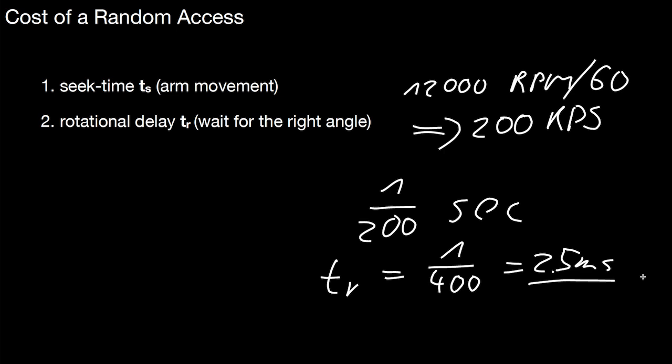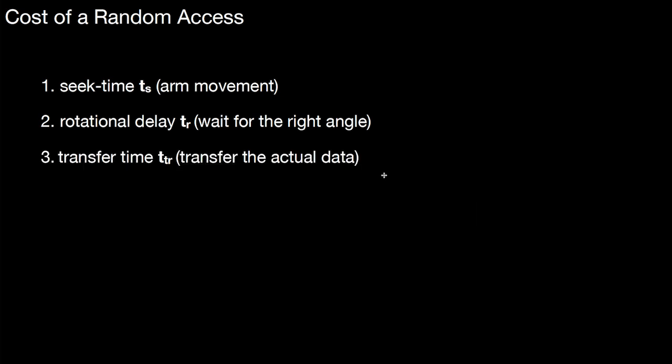That's the rotational delay, sometimes also referred to as latency. You have to be very careful when looking at the specifications of hard disks. The cost of a random access involves several components. The third is the transfer time, the actual time to transfer the sector and read it from the disk. These three components determine the total cost of a random access, though other components like head switch times and operating system request times can also factor in.